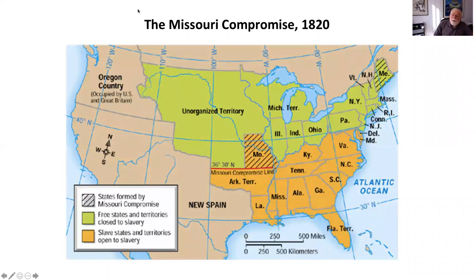The Missouri Compromise was a critical event. By that time, there were an equal number of southern slave states and free states, so they had parity in the Senate. Even with the three-fifths rule, free state representation in the House was outpacing the south. New York, Pennsylvania, Massachusetts, and Ohio all had rapidly growing populations, much faster than in the slave states.